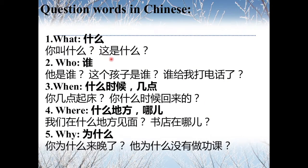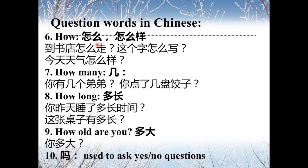Let's do a quick recap. The question words in Chinese are: 什么 — what; 谁 — who; 什么时候 / 几点 — when; 什么地方 / 哪 — where; 为什么 — why; 怎么 / 怎么样 — how; 几 — how many; 多长 — how long; 多大 — how old (age); 吗 — used for yes-no questions.